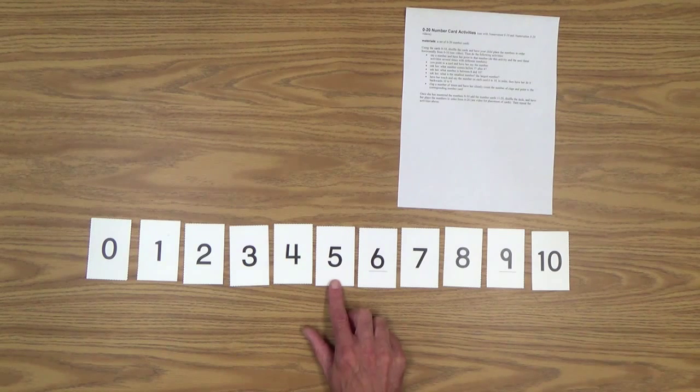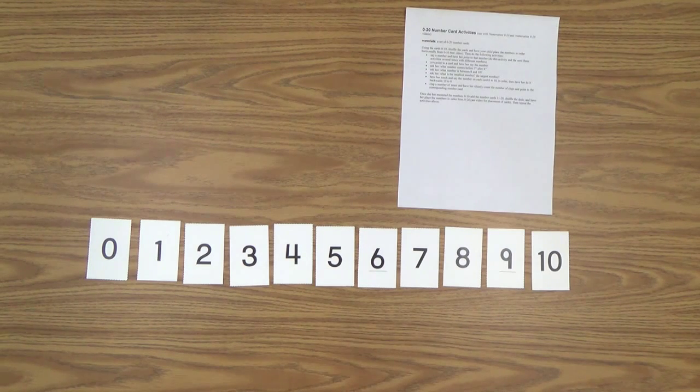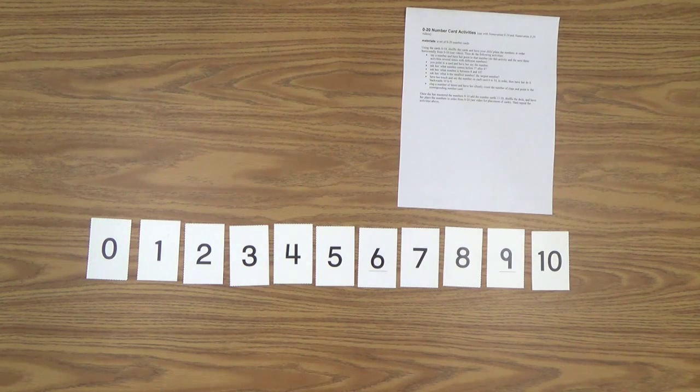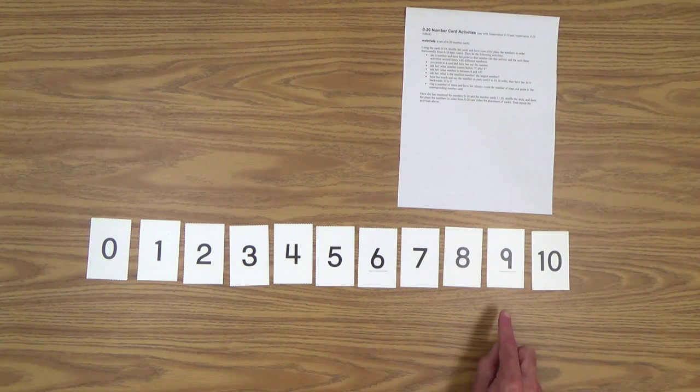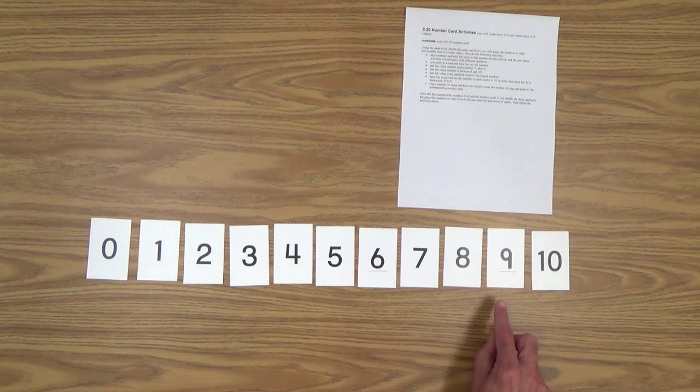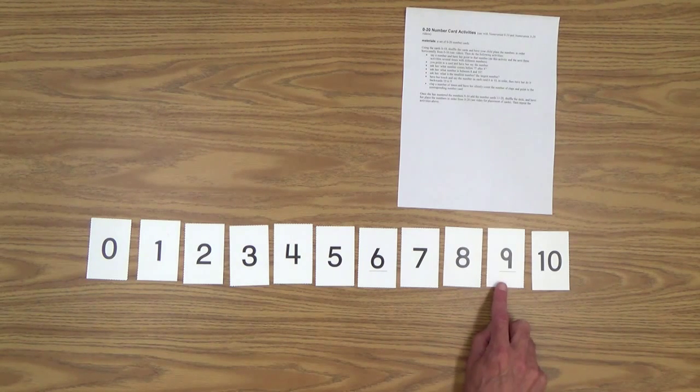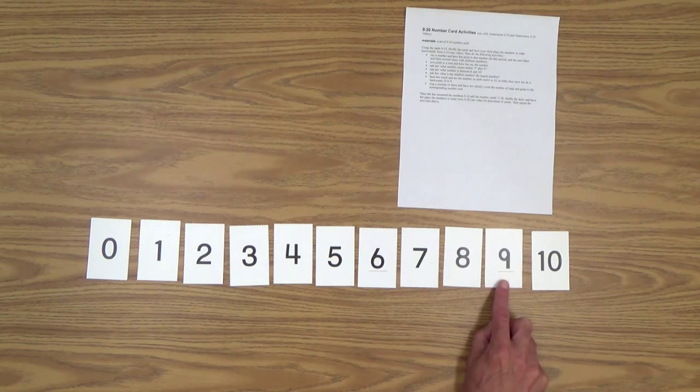You could ask her what number is between eight and ten. And of course this makes it even a little more challenging. So she'll have to look, find those numbers. Of course, you'll have to know those numbers, what they look like. And hopefully she will point to the number nine and say nine.